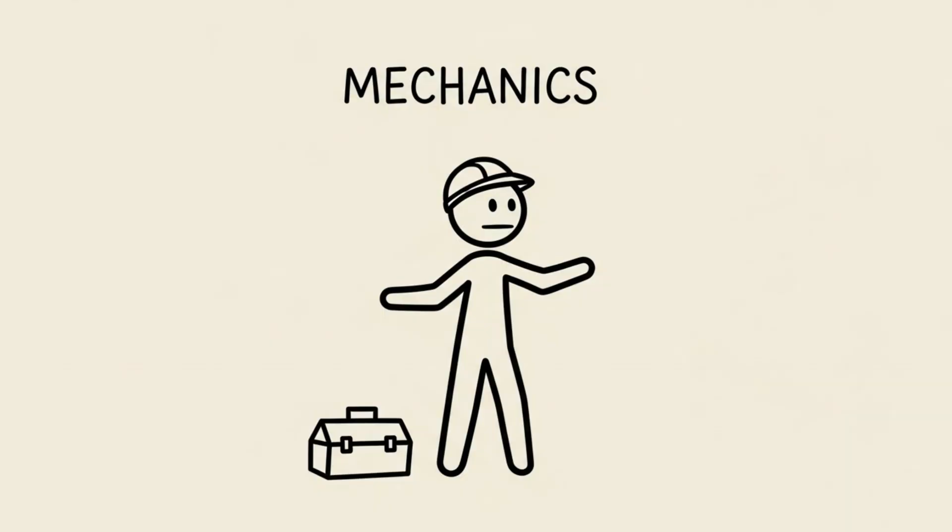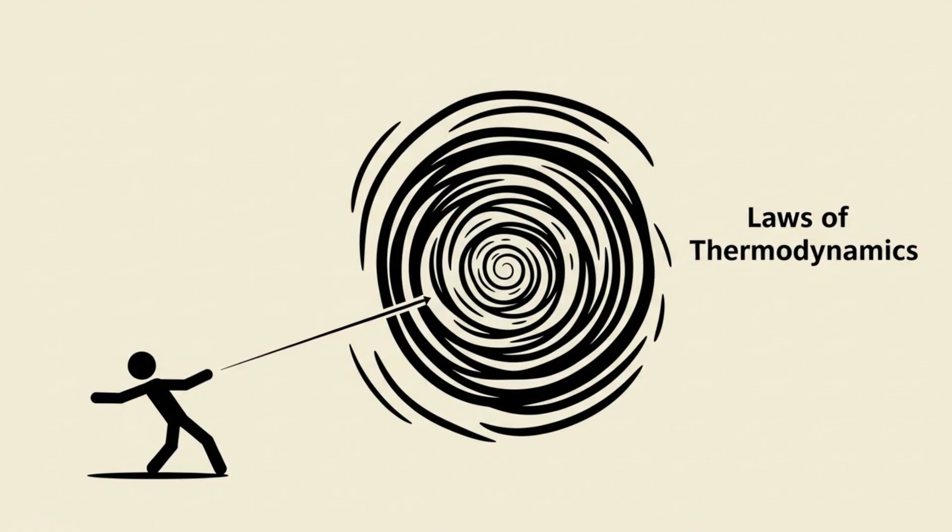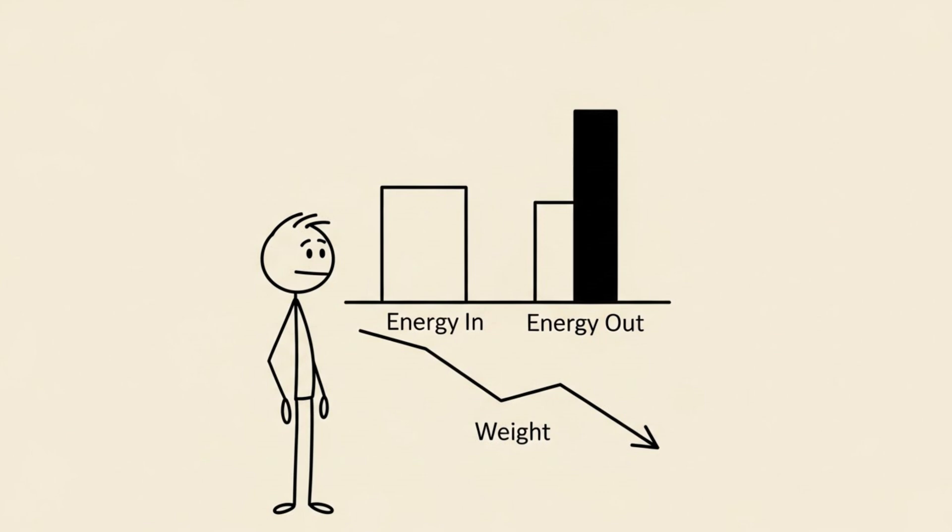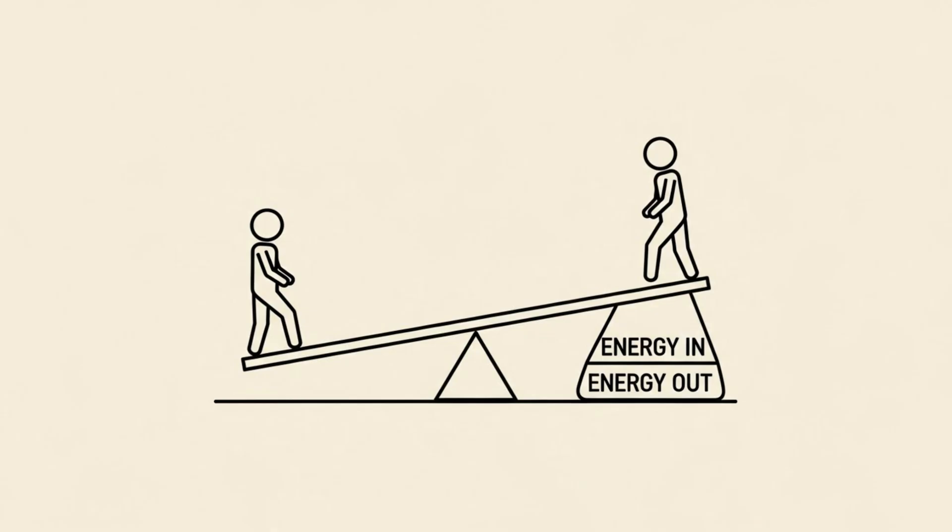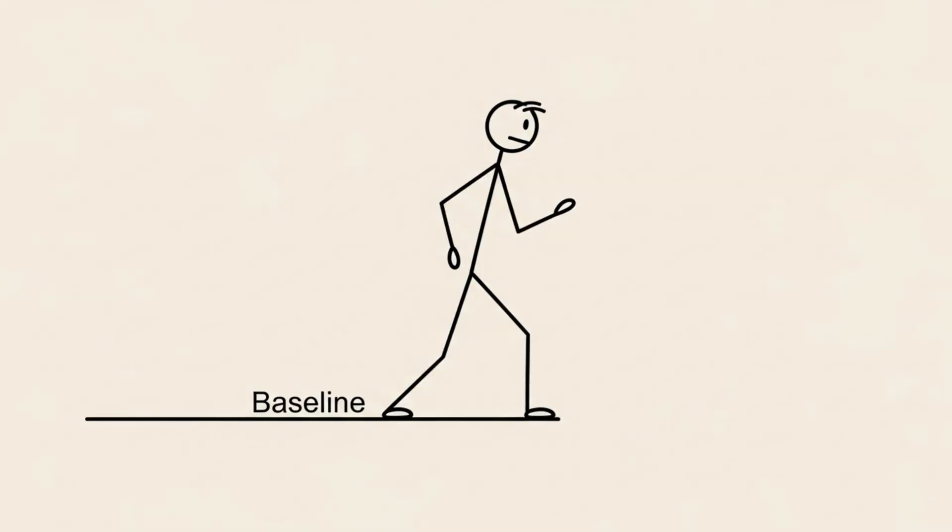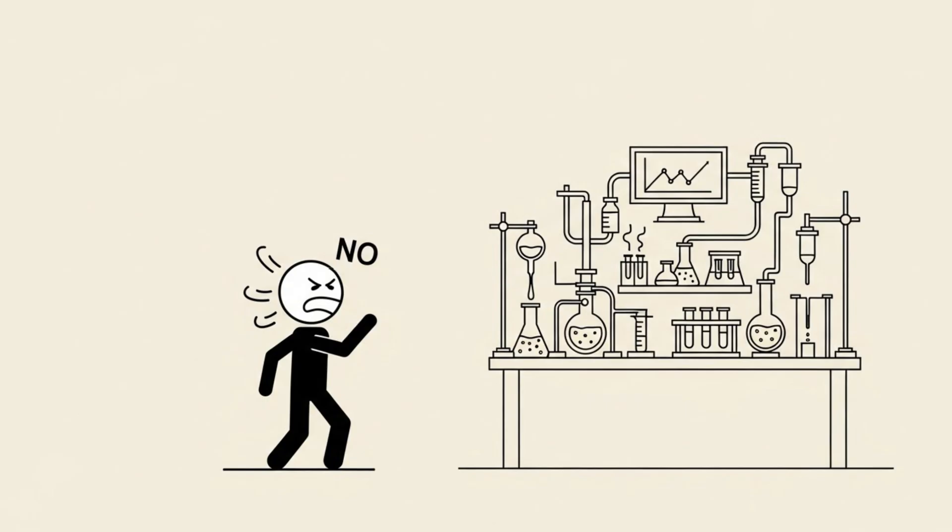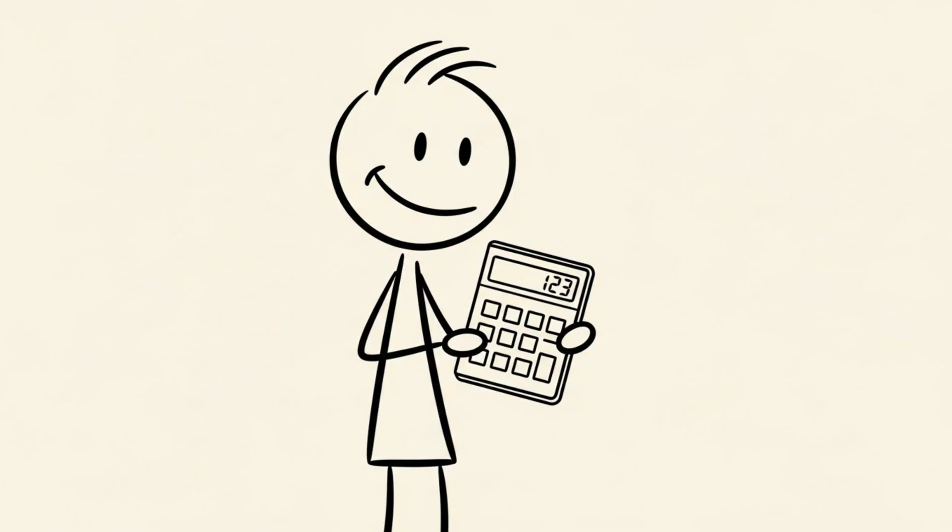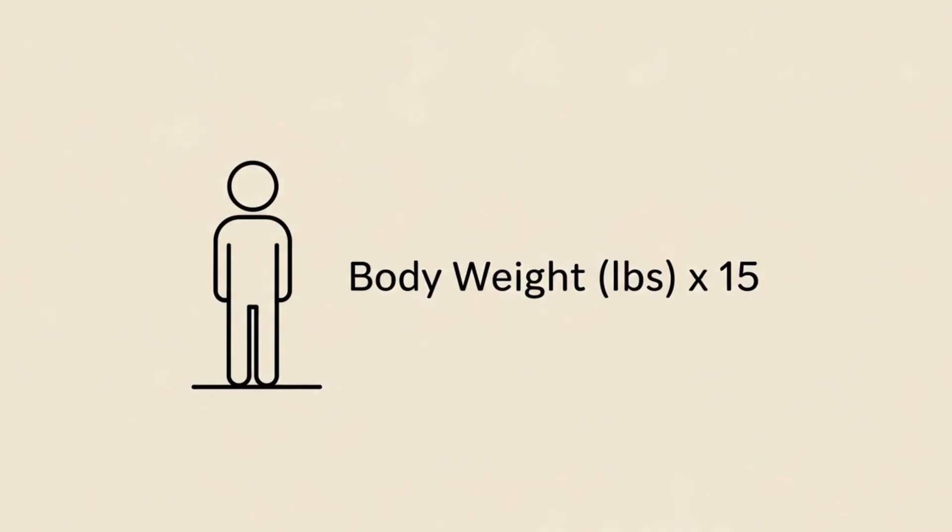Now, let's look at the mechanics. You cannot escape the laws of thermodynamics. Weight loss boils down to being in a sustainable caloric deficit. You need to burn more energy than you consume. It is simple, but simple does not mean easy. The first step is figuring out your baseline. You don't need a metabolic ward. You just need a calculator. A good rule of thumb for the average person is to take your body weight in pounds and multiply it by 15.